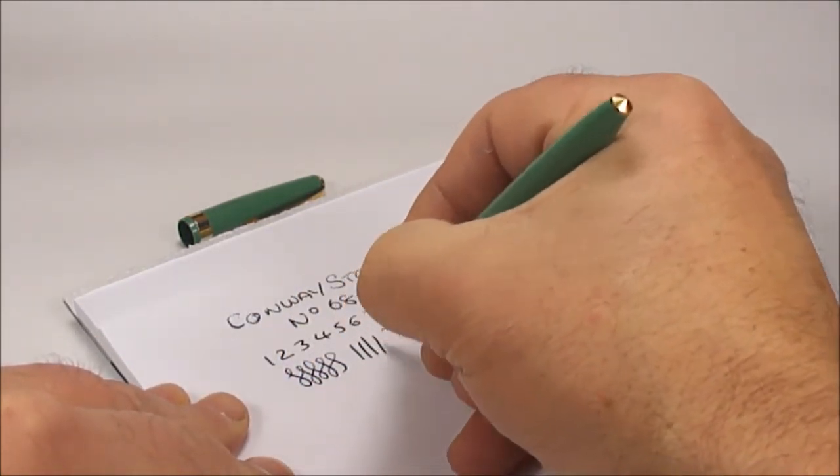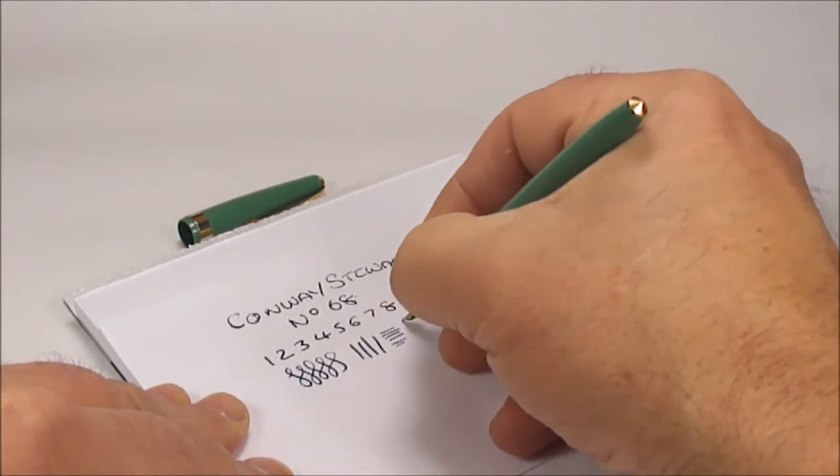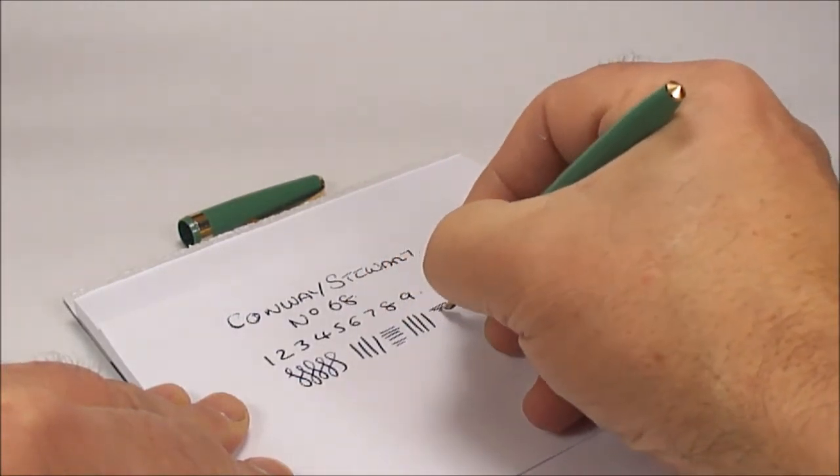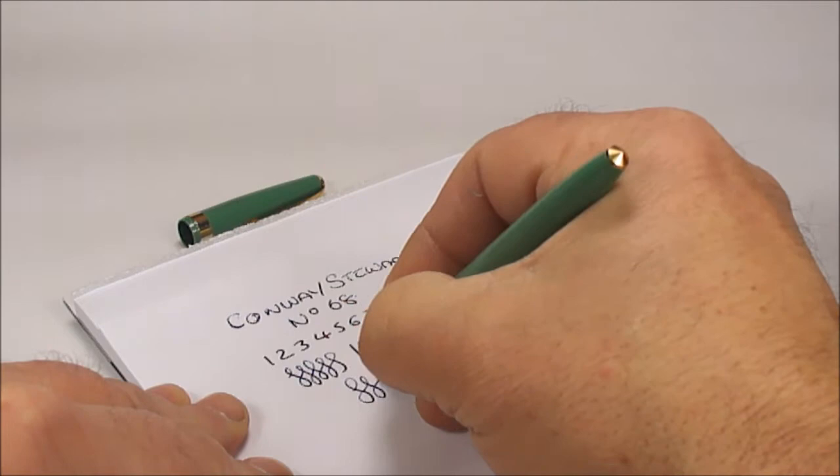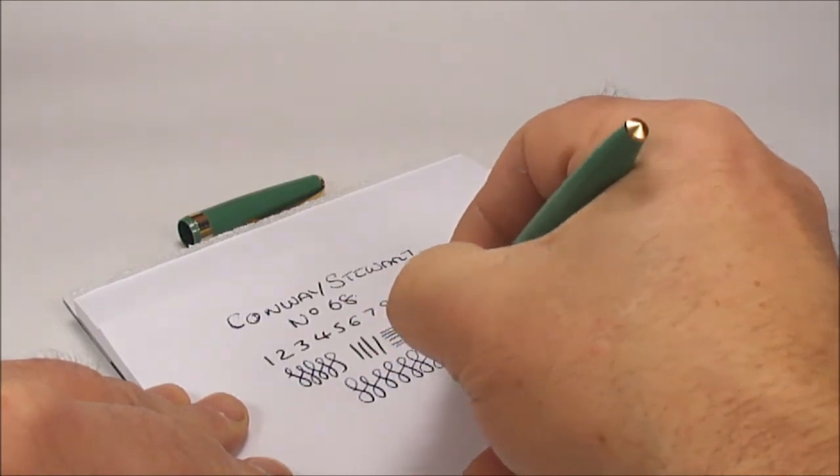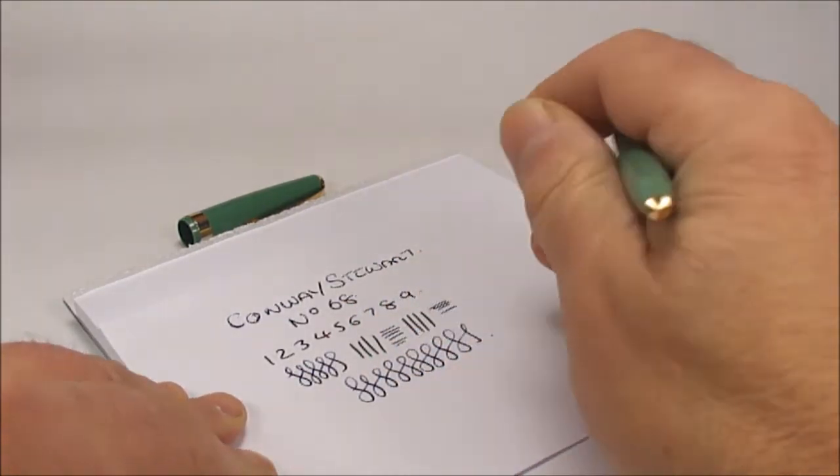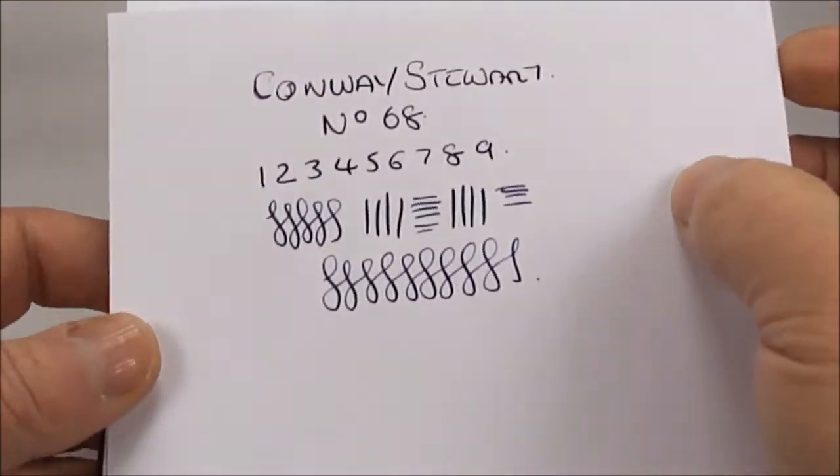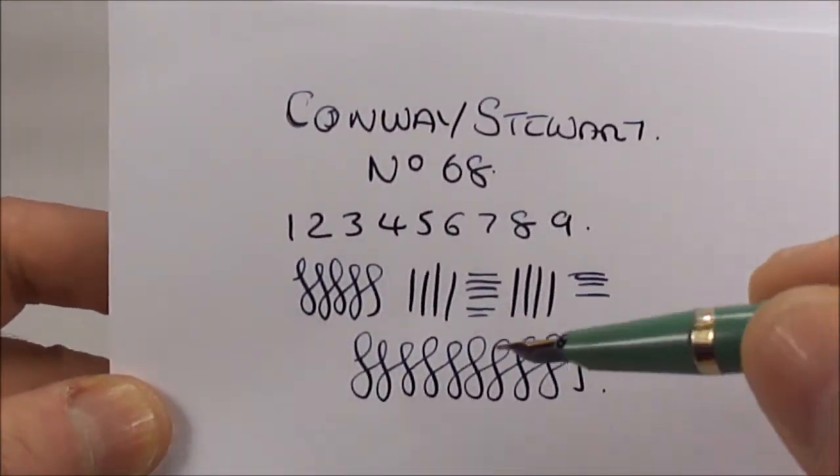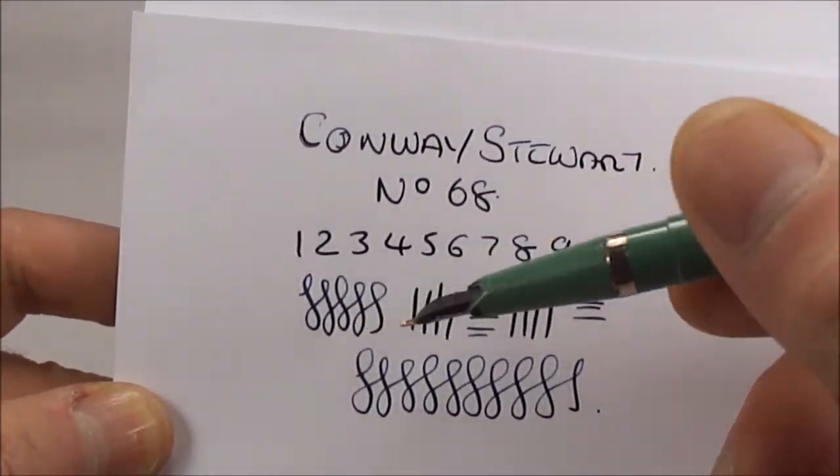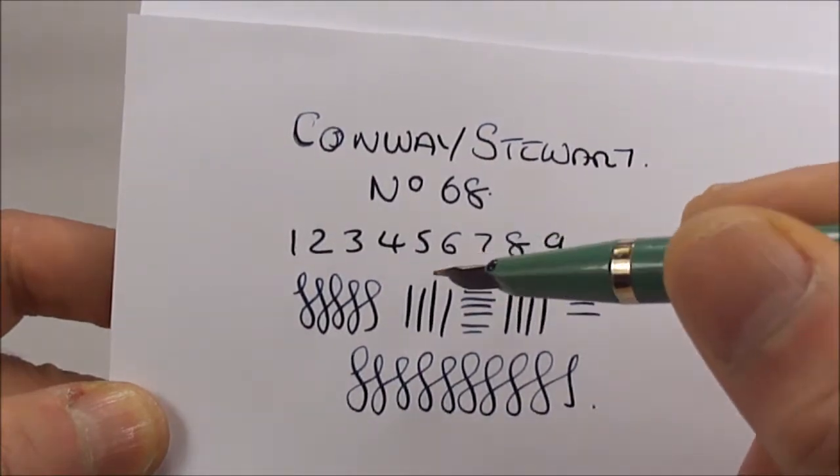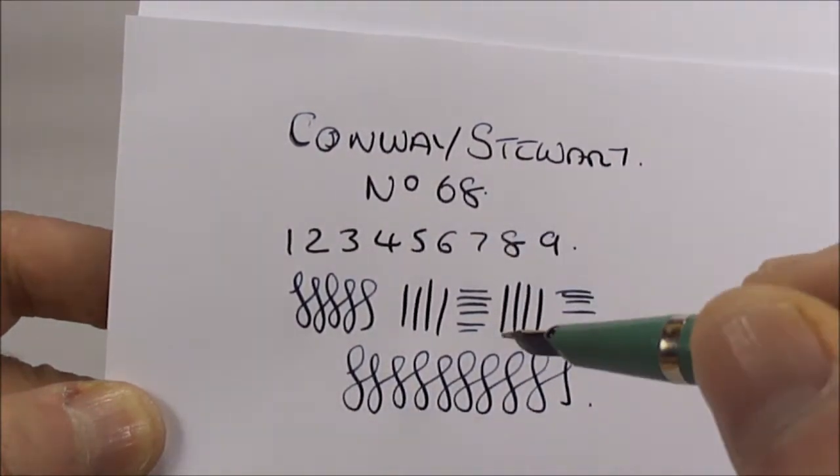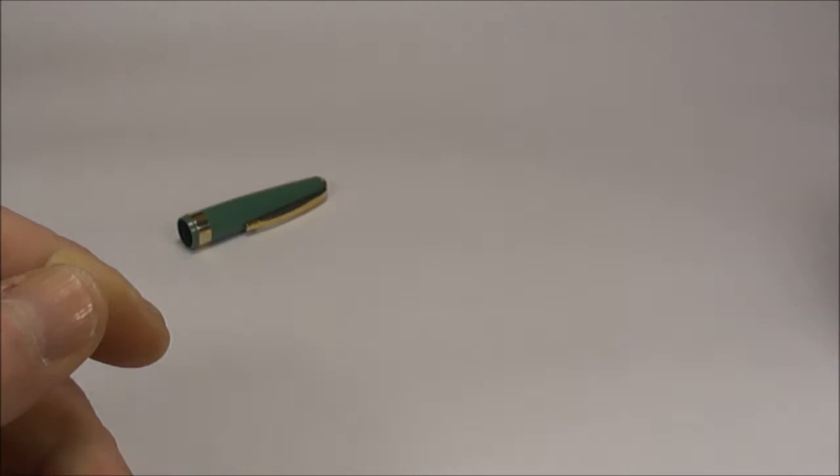There's no variation in the line, so it's quite a stiff nib. But saying that, well can't complain, a nice writer. So let's show you the writing sample there. So as you can see, a medium line, no variation, but yeah, a very nice writer. So let's pop that to one side.